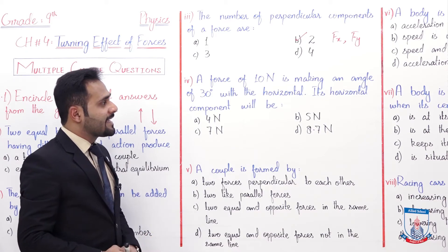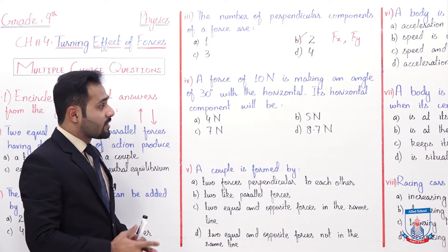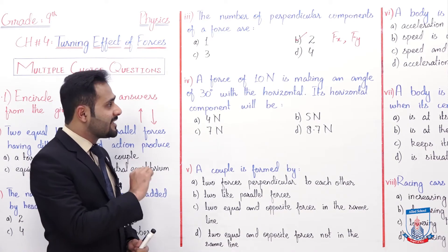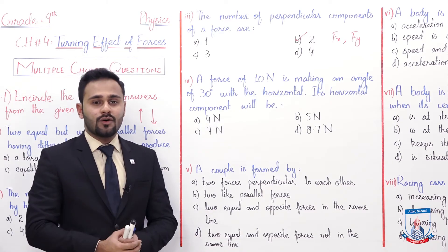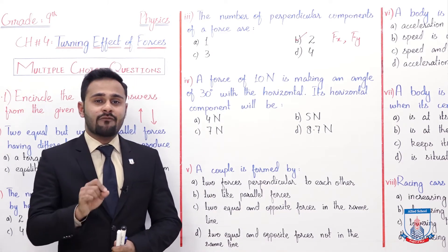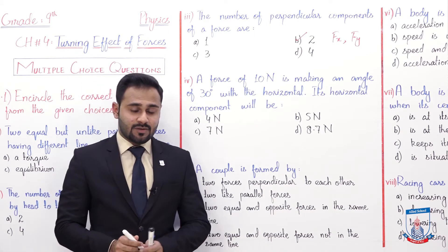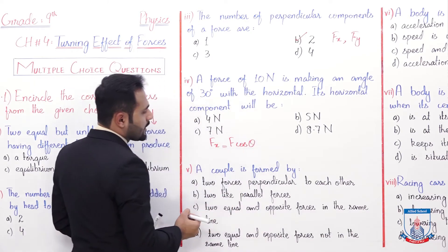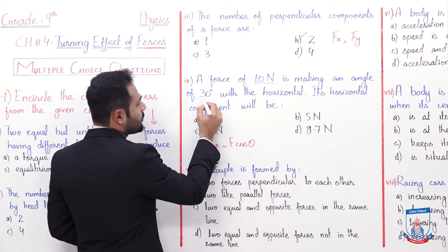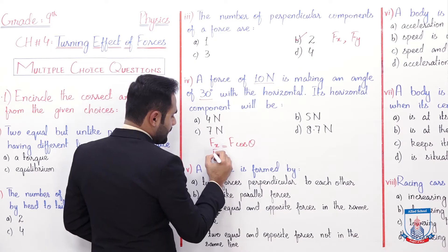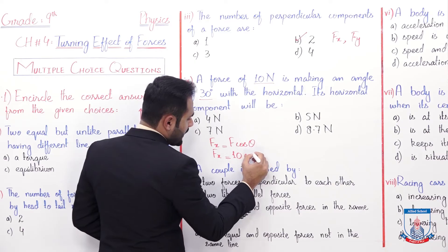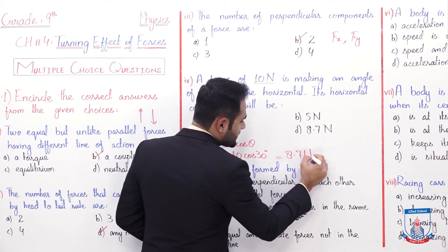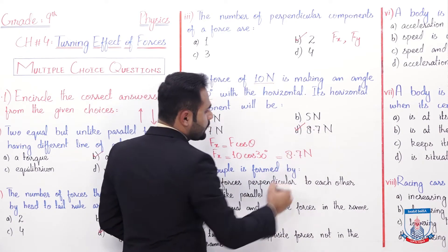MCQ number four: A force of 10N is making an angle of 30 degrees with the horizontal. Its horizontal component will be calculated. The horizontal component means Fx, and Fx equals F cos θ. The force is 10N and theta is 30 degrees. Solving with a calculator gives a final answer of 8.7N. The correct option is D, which is 8.7N.